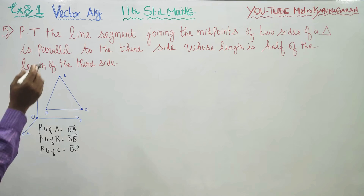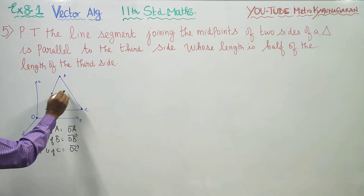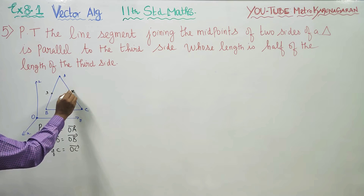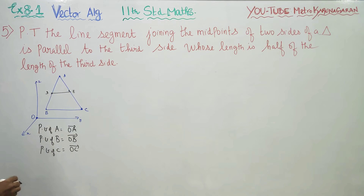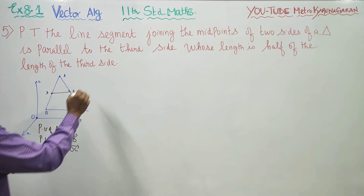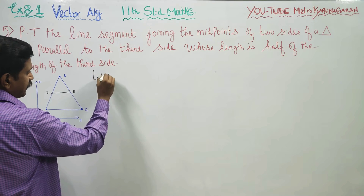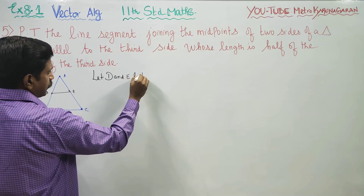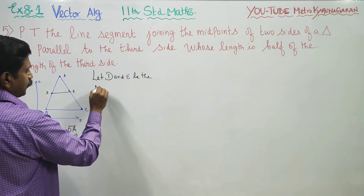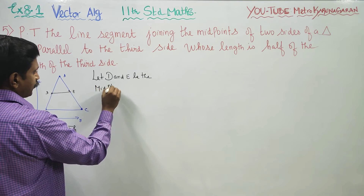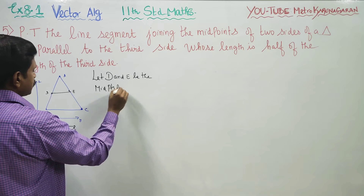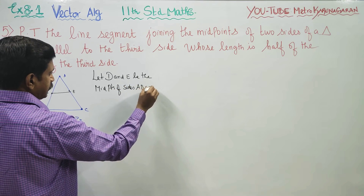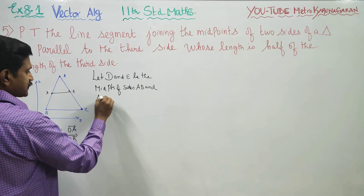Next, midpoints. Let D and E be the midpoints of sides AB and AC respectively.